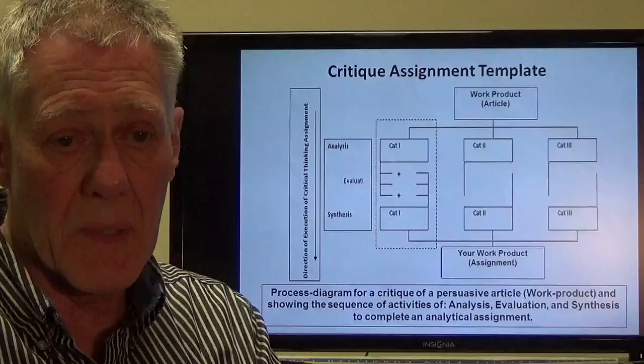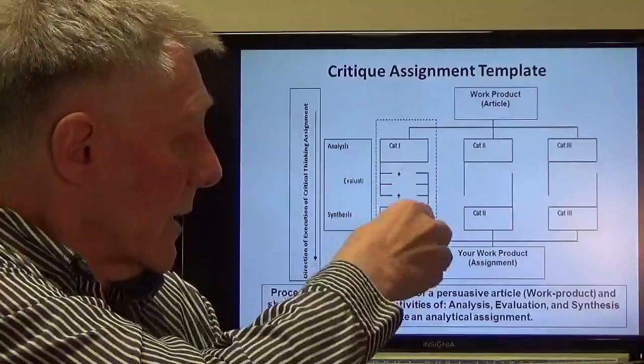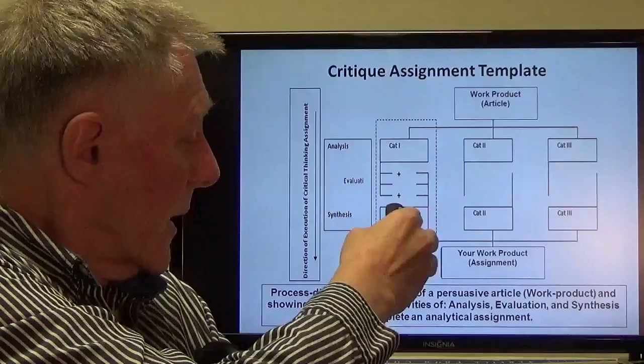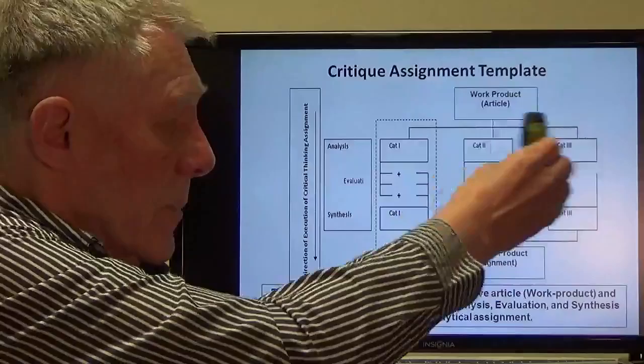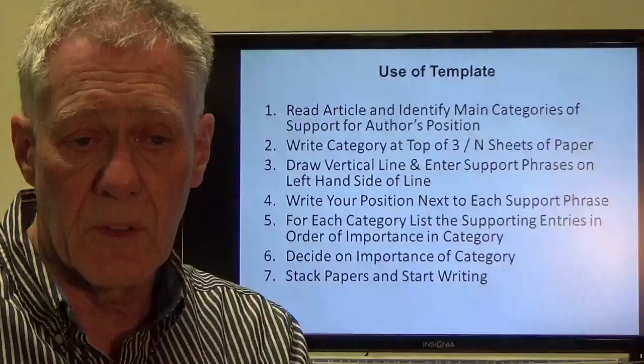You then look at that, and for each one of these you have whether you agree or disagree, and the countervailing argument or the agreement element. And then eventually you get down here — it may be that you call it the same category or not — but nonetheless you would have analyzed it, evaluated it at the support level, and then synthesized it by having these various categories and pulling them all back together into your product, which you'll submit.